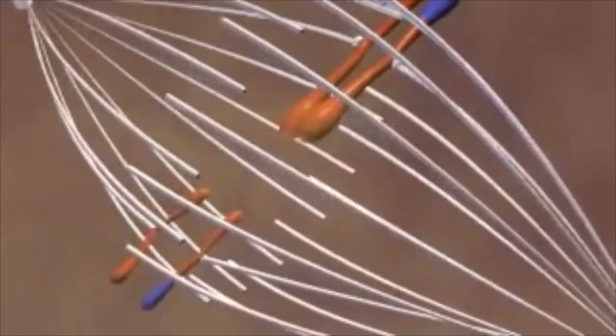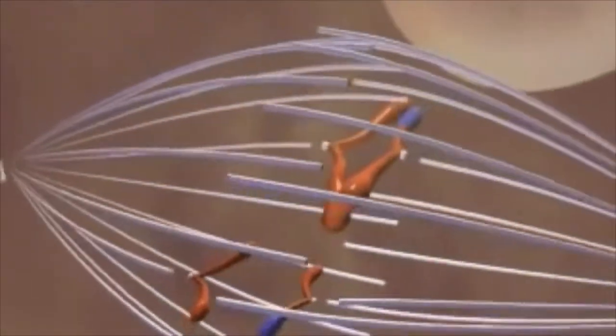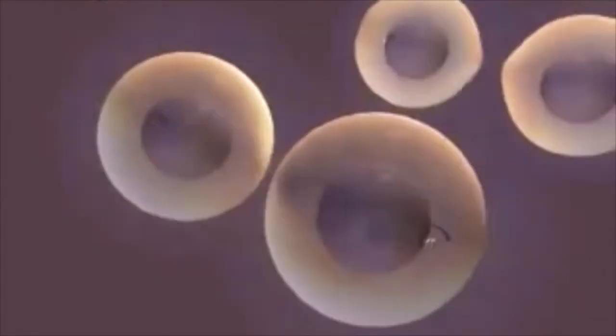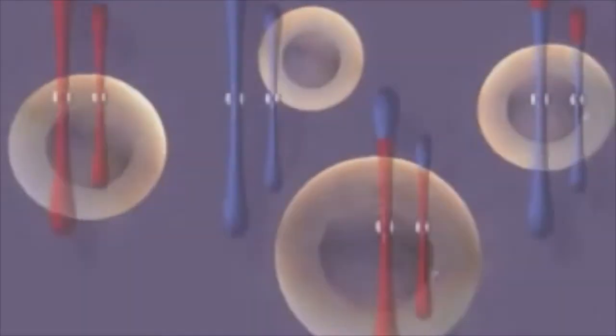At the end of meiosis II, we have four nuclei, each with half the chromosomes of the original nucleus, and all differ genetically from others.